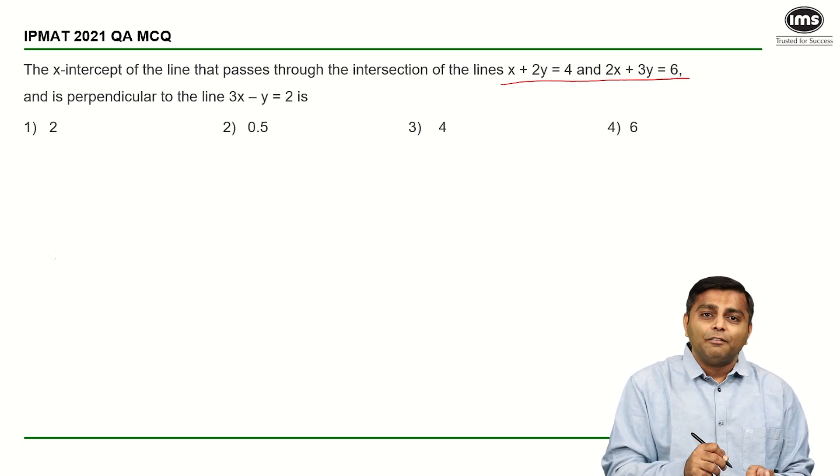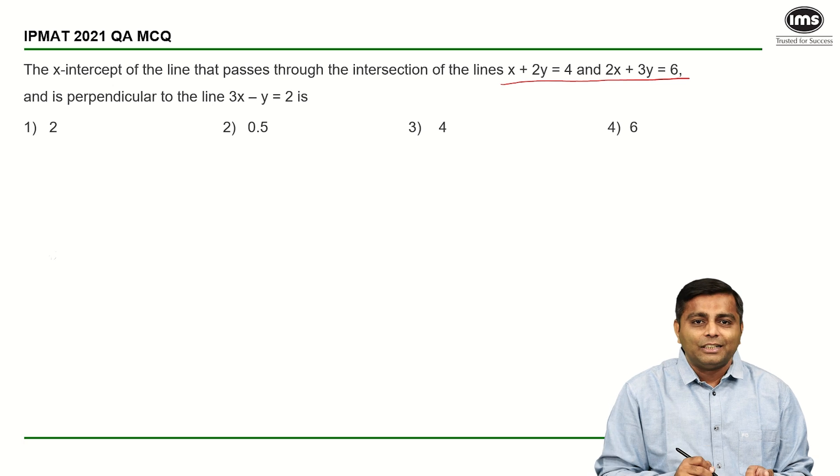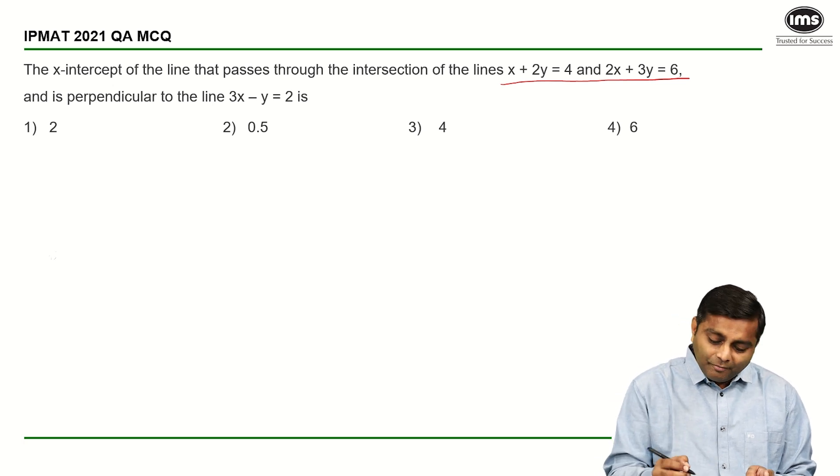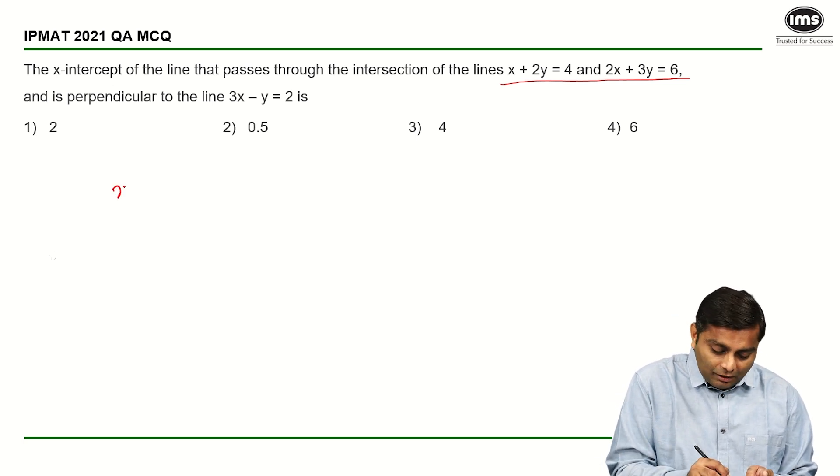And we are given a line which is perpendicular to the asked line. So we will find out the slope from there. Great. So let's first solve the equations simultaneously.